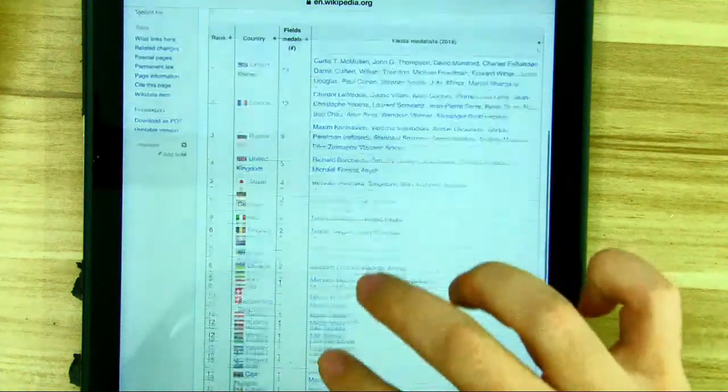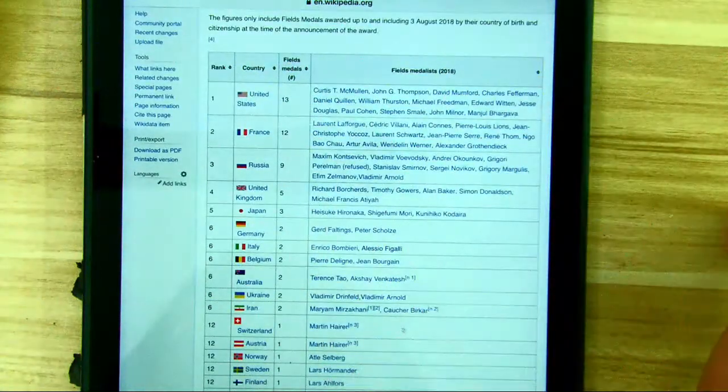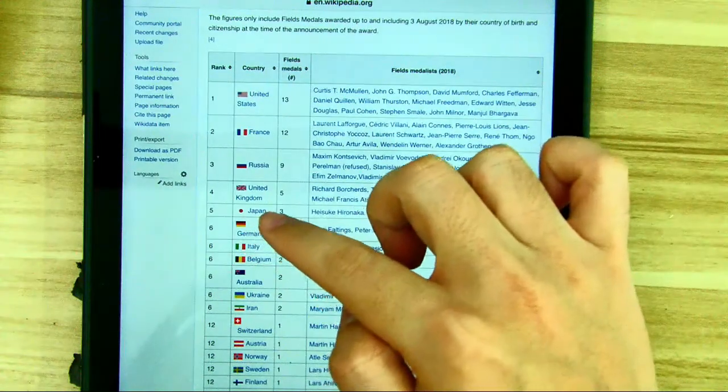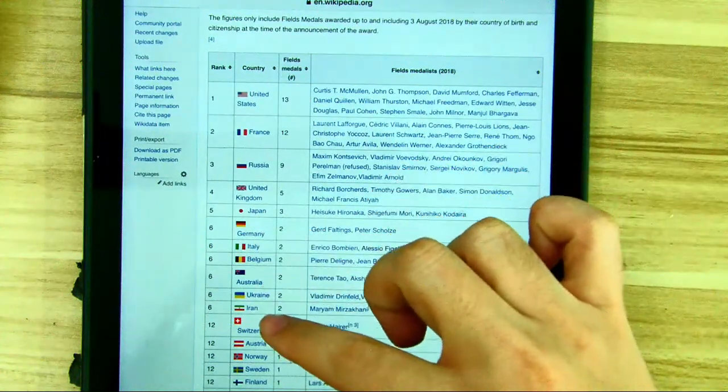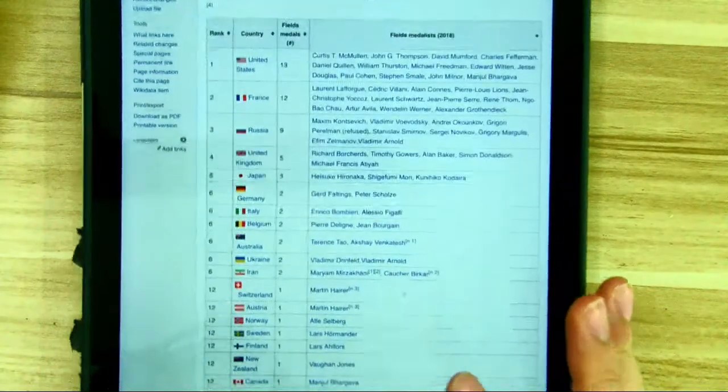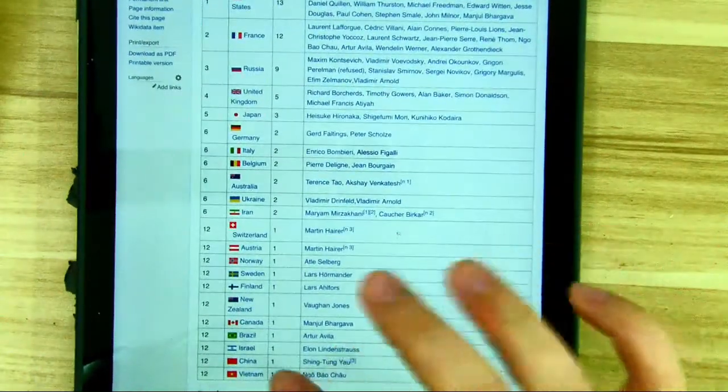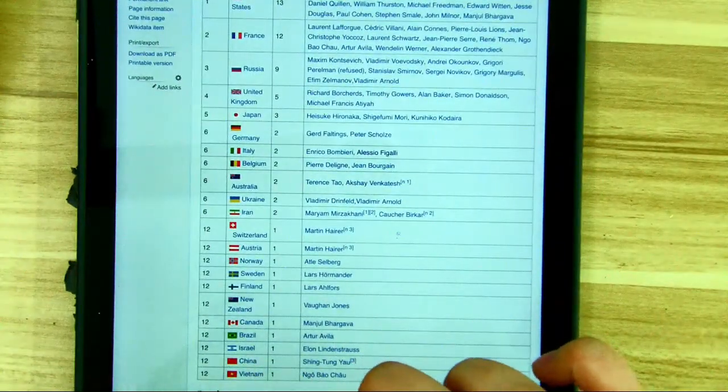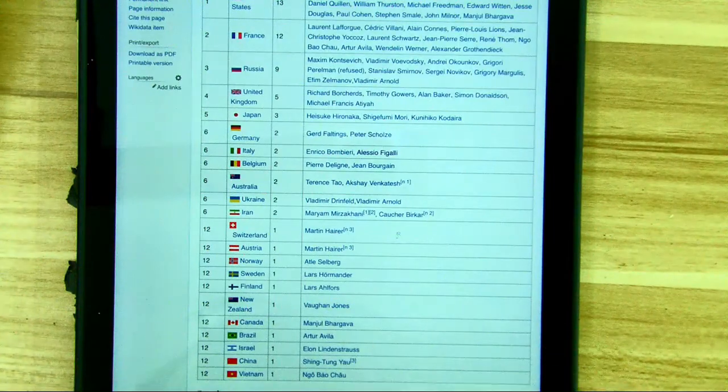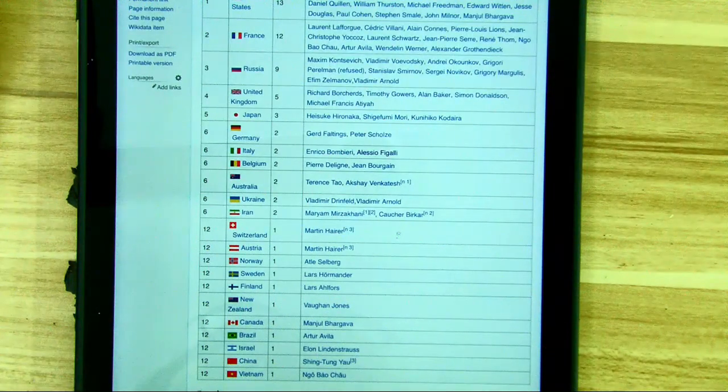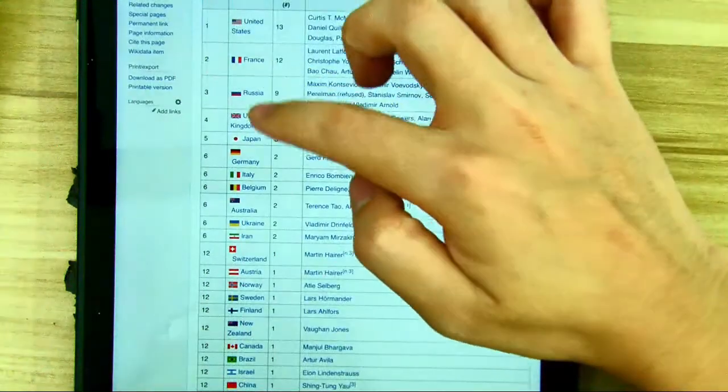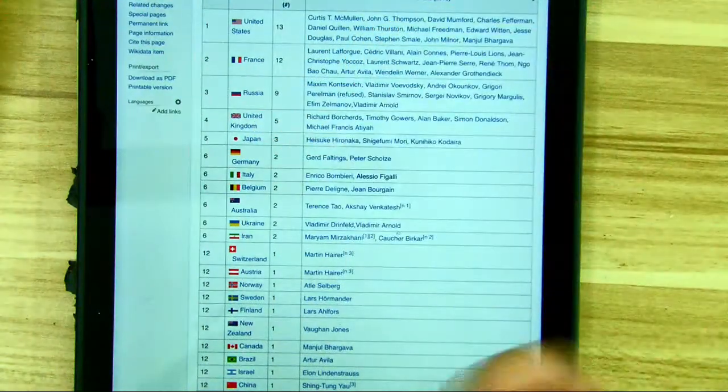It's like the Asian countries are gone. There are three from Japan, two from Iran, one from China, and one from Vietnam. The US, France, and Russia really dominate the Fields Medals.